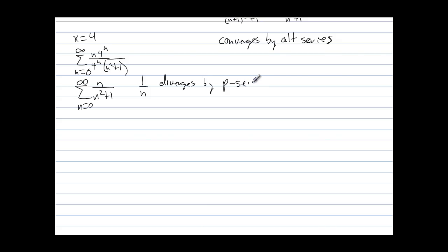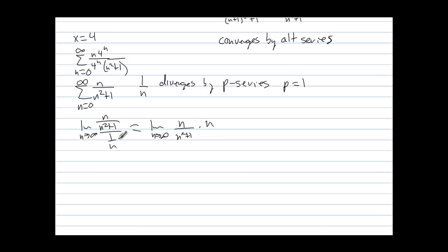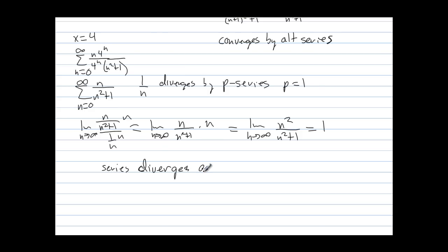It diverges by the p-series test where p equals 1. We take the limit as n approaches infinity of (n over n squared plus 1) divided by (1 over n), which equals the limit as n approaches infinity of n squared over n squared plus 1, and that equals 1. Since the limit is finite and positive, the series diverges at x equals 4 by the limit comparison test.